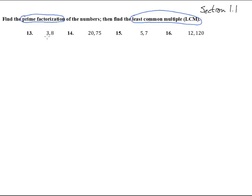So here we're going to take the prime factorization of 3, well that's just 3, and 8. We break it down, that's 2 times 4, 2 times 2, so we get 2 times 2 times 2. Now there's the prime factorization of those two numbers.